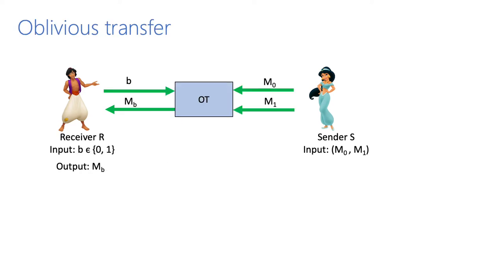In this work, we consider the primitive of Oblivious Transfer, or OT. It is a two-party protocol between a receiver and a sender. The receiver has an input choice bit B, and the sender has two messages M0 and M1. By performing the OT protocol, the receiver obtains the message of his choice. OT security ensures that a corrupt receiver should not know the other message M_{1-B}, and a corrupt sender should not know the choice bit B.